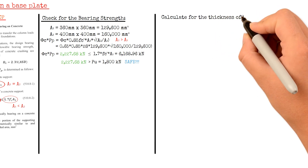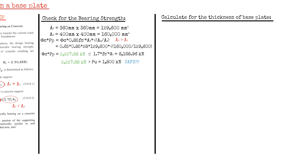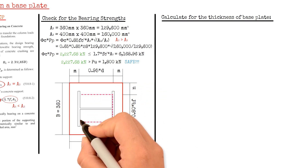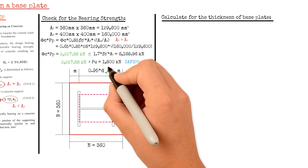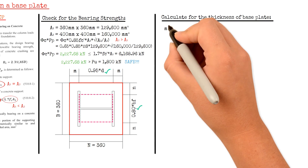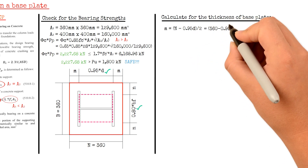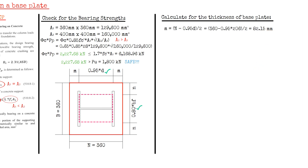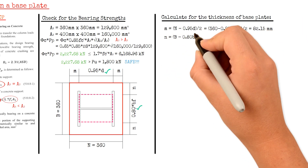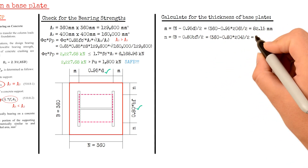We will now move on to calculating the required thickness of the base plate. For wide flange sections, the equivalent compressive area is the product of 95% of the depth times 80% of the width. Solving for the bearing interface cantilever variables M and N: M equals (N − 0.95 × depth) / 2, giving 82.15 mm. N equals (B − 0.8 × width) / 2, giving 98.4 mm.